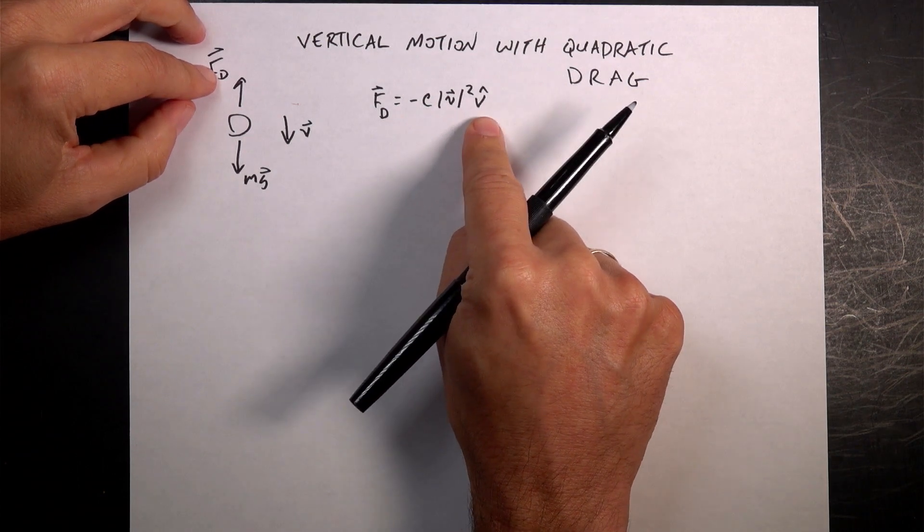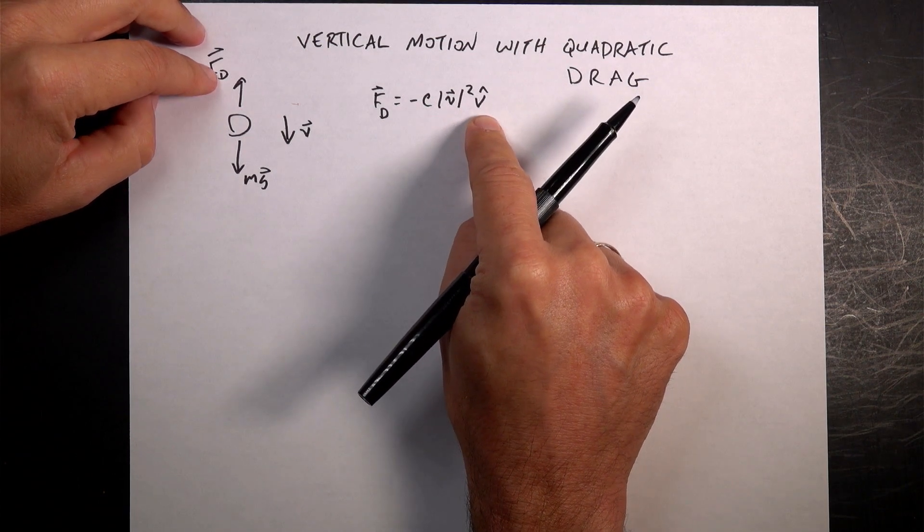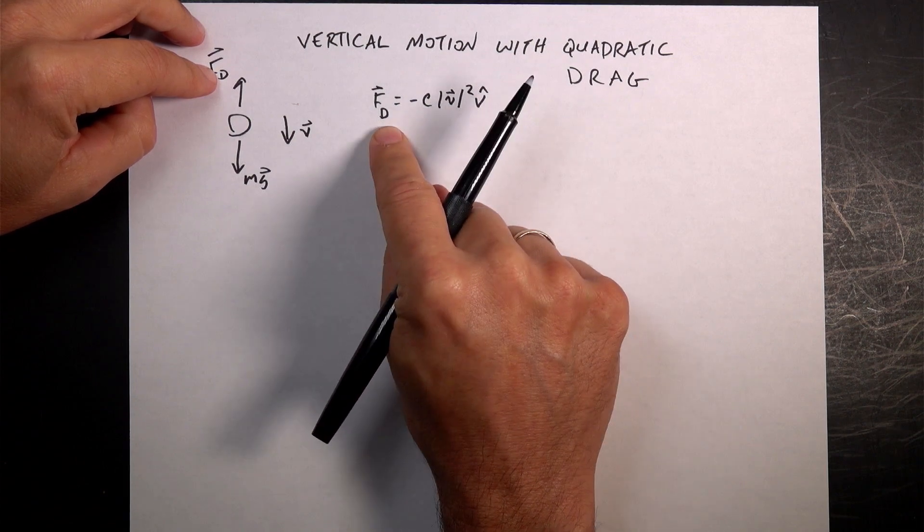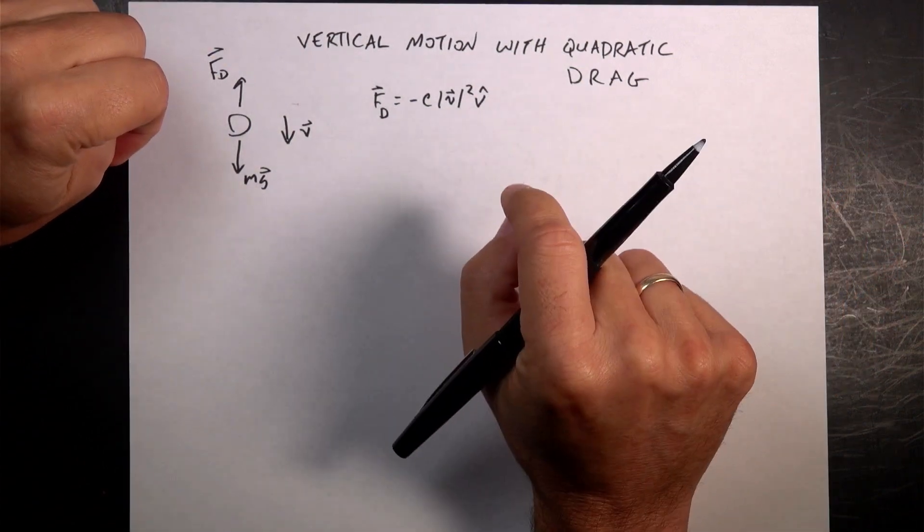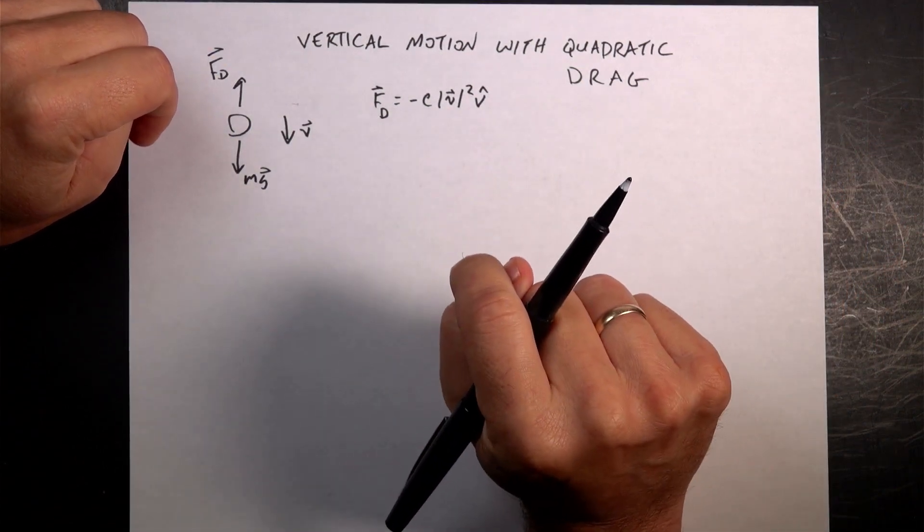And then the magnitude of the velocity, and then this V hat is a unit vector, because once you take the magnitude of the velocity, you can't get a vector. Don't worry, we're going to deal with this in one dimension anyway, so we're not going to worry about that.